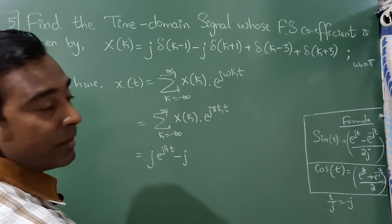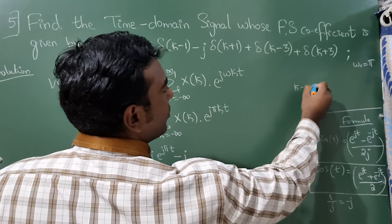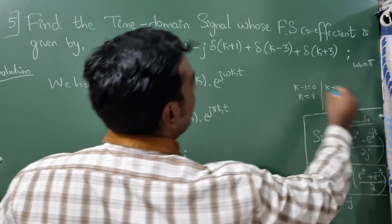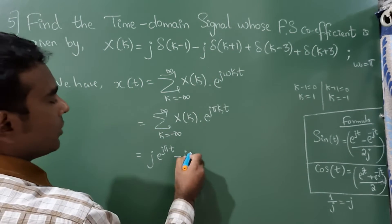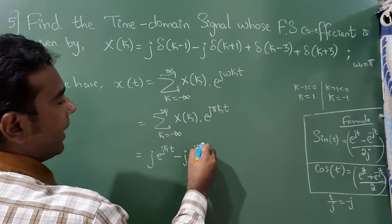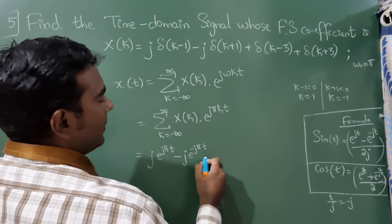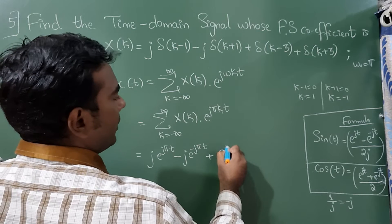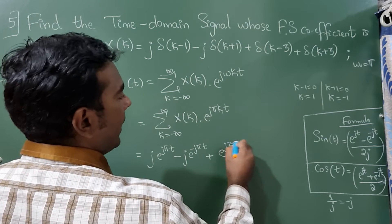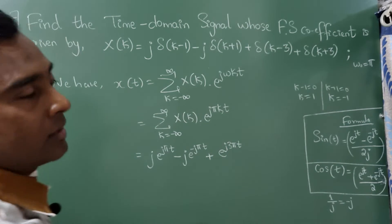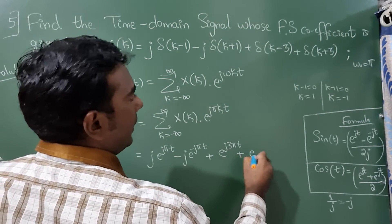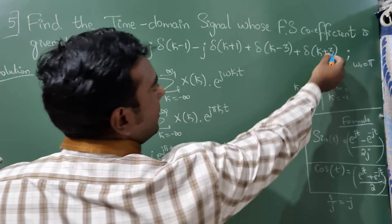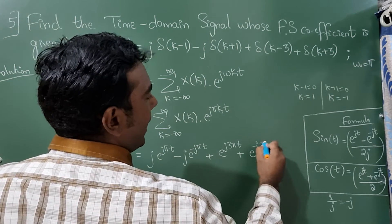Now here k value will become minus 1. You can even tell like this: k minus 1 is equal to 0, k is equal to 1. And k plus 1 is equal to 0, so k is equal to minus 1 from here. So e raised to minus j pi t plus this you can write as e raised to j 3 pi t because there is a 3 here, plus e raised to minus j because k value is minus 3 pi t.